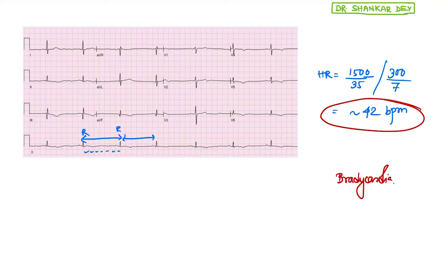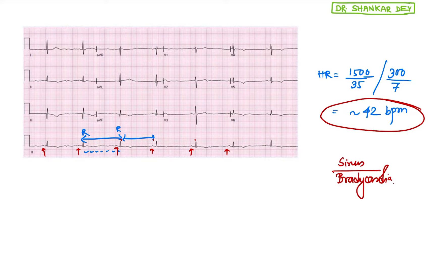The RR interval is very prolonged. The distance between two R waves is the same, and the distance between P waves is also the same. The P and R waves are coming at regular intervals — so this is actually sinus bradycardia. There is no sign of arrhythmia.